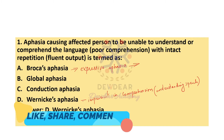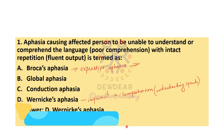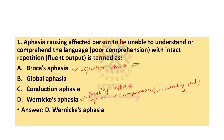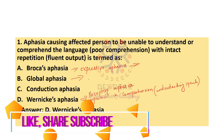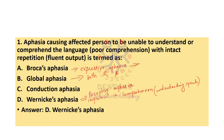Wernicke's aphasia means the speech output will be normal, but there will be impairment in understanding or comprehension. So Wernicke's aphasia is also known as receptive aphasia, while Broca's aphasia is also known as expressive aphasia. In global aphasia there is impairment in both receptive and expressive language.